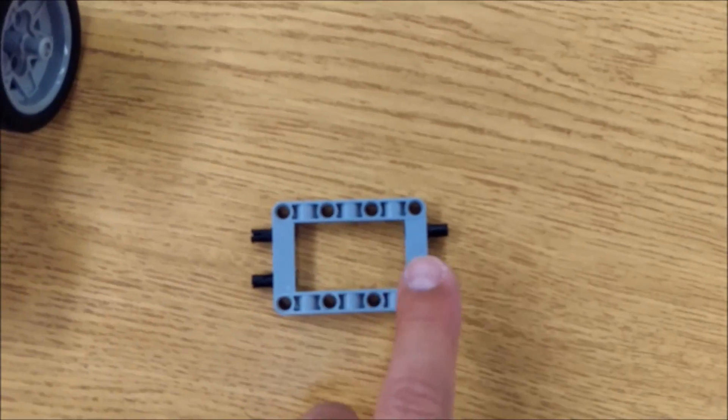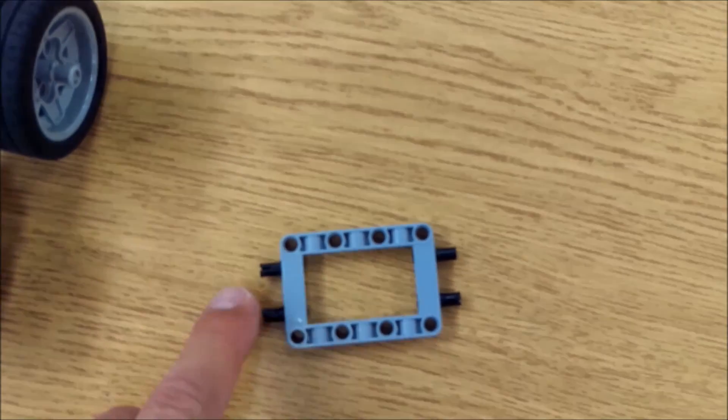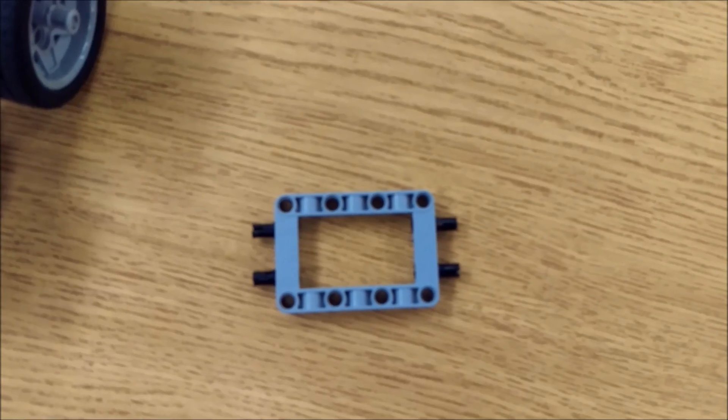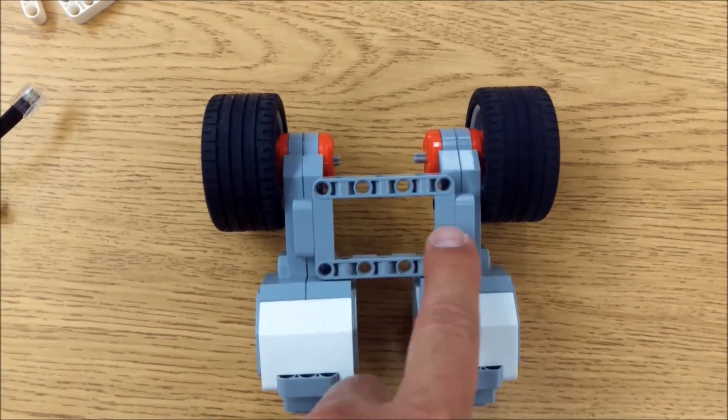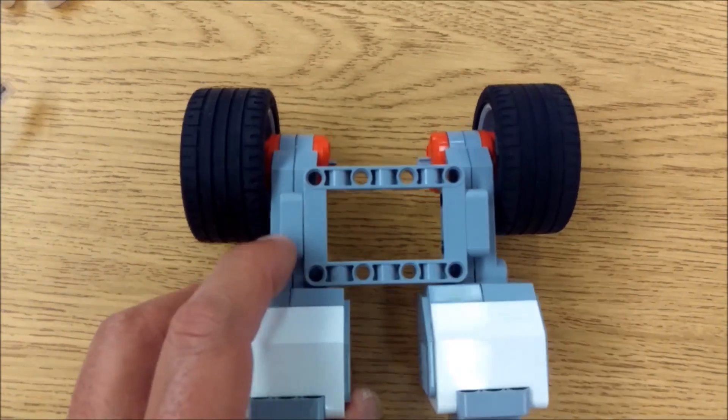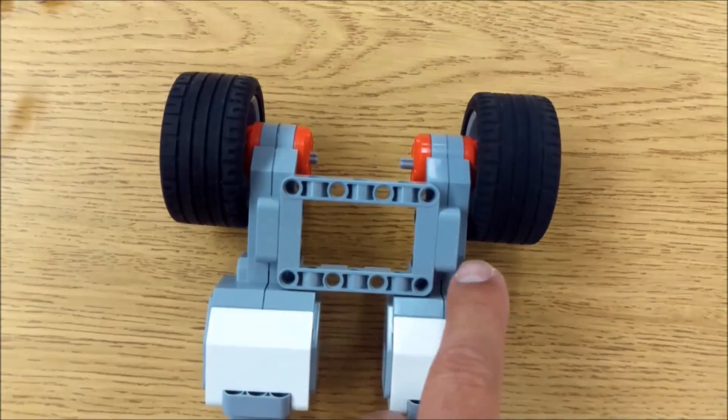Next I'm going to take one of my gray squares and put in four black connectors on each side. And then what I'll do is I took the gray square and basically connected it into both motors on either side.